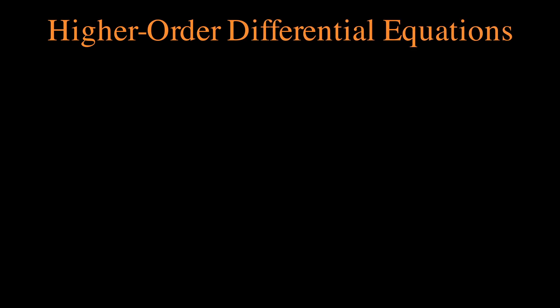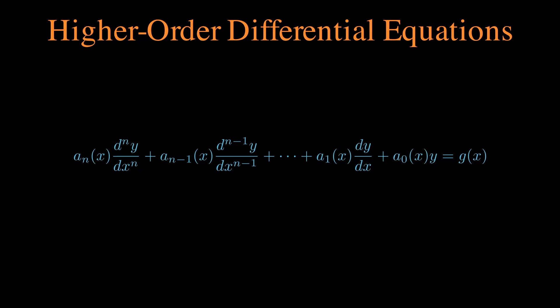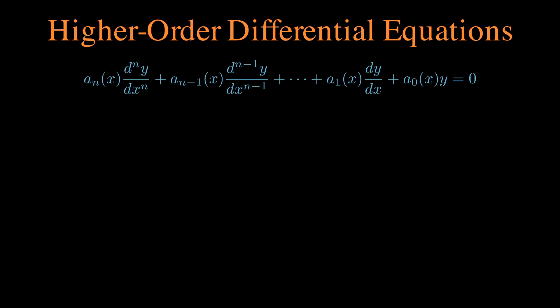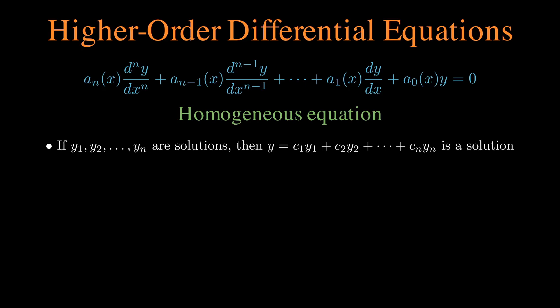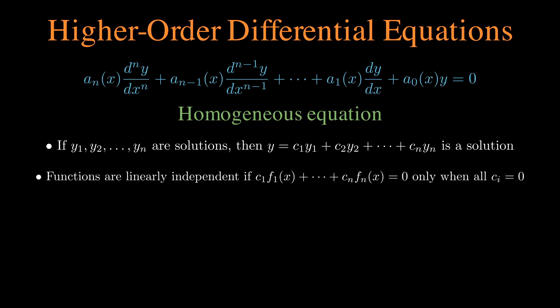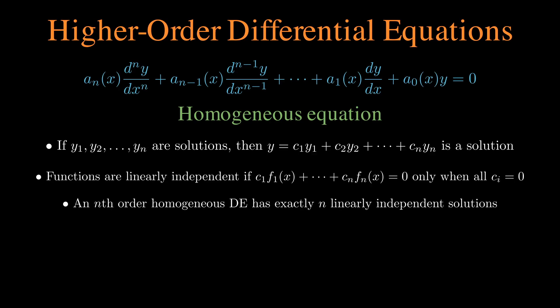Now let's get to higher-order differential equations. Let's simplify by making the right-hand side equal to 0 — these are called homogeneous equations, and they have some really nice properties. If you have a list of solutions, their linear combination is also a solution. If we can't find coefficients where solutions cancel each other, we call them linearly independent. Furthermore, an nth-order homogeneous differential equation has exactly n linearly independent solutions, so the general solution must be a linear combination of those independent solutions.